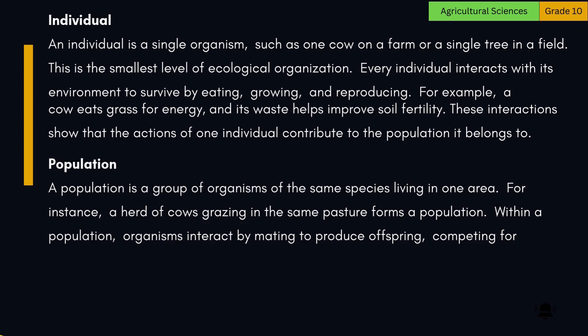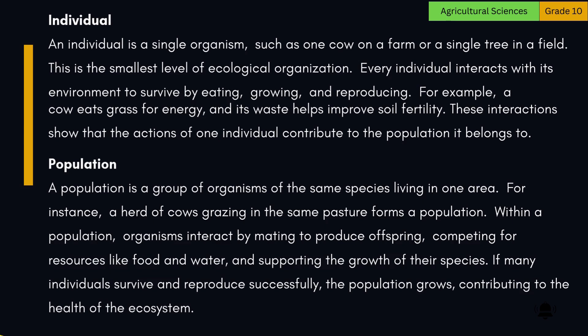A population is a group of organisms of the same species living in one area. For instance, a herd of cows grazing in the same pasture forms a population. Within a population, organisms interact by mating to produce offspring, competing for resources like food and water, and supporting the growth of their species. If many individuals survive and reproduce successfully, the population grows, contributing to the health of the ecosystem.